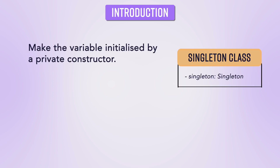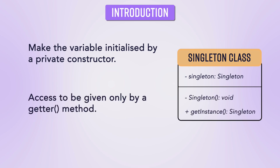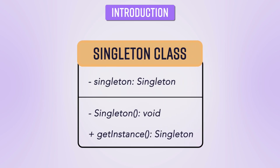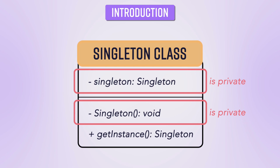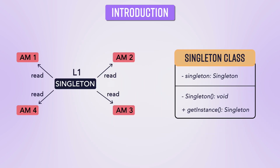The problem is: how do we protect this variable? You protect it by initializing that variable using a private constructor and not allowing anyone else access to that constructor. You only allow access to that variable through a getter. This is how the class diagram of a singleton pattern looks: a singleton class has just one private instance, a private constructor, and the only public thing accessible to other modules is the getter function which returns that instance. This ensures all application modules access the same instance and none can modify it.